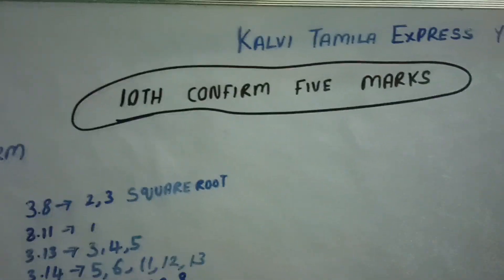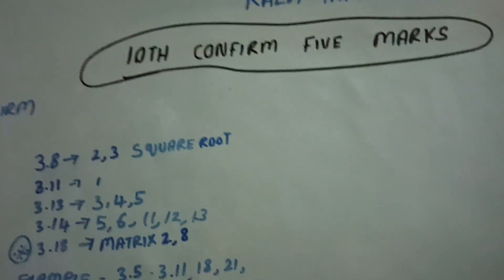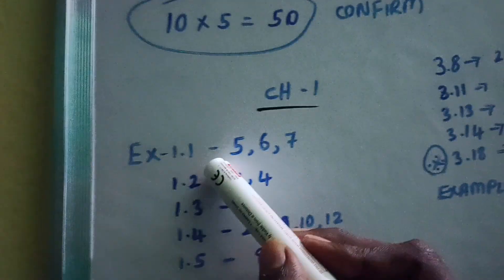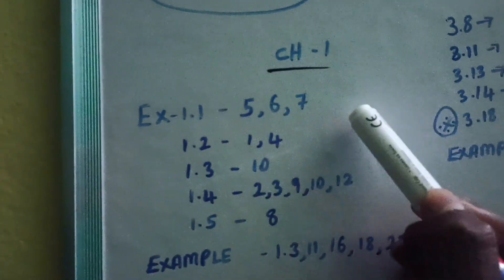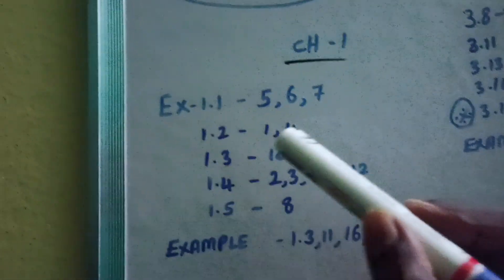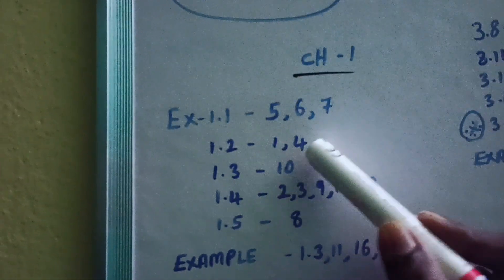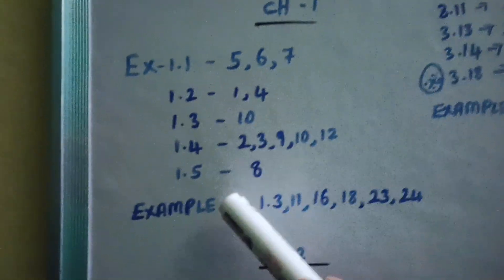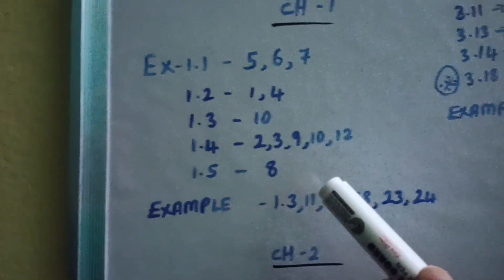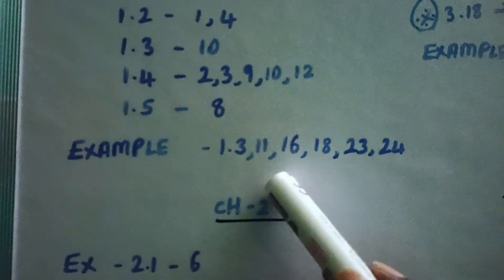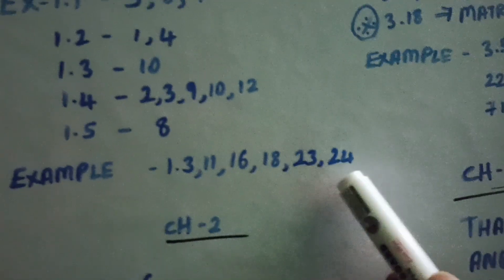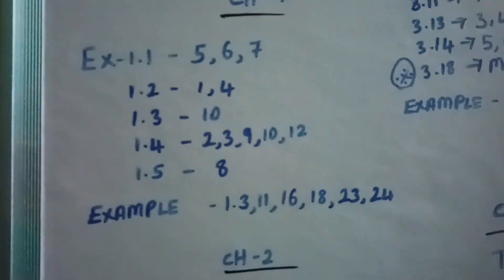We will go to our video and we will see the 10th confirm 5 marks. After the exam, you will get a lot of important 5 marks. In the first chapter, we will go to exercise 1.1 — questions 5, 6, 7 are confirmed. Exercise 1.2, 1.3 is question 10. Exercise 1.4 is questions 2, 3, 9, 10, 12. Exercise 1.5 is question 8. Also 1.3, 1.11, 1.16, 1.18, 1.23, 1.24 in the first chapter.